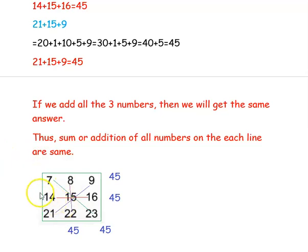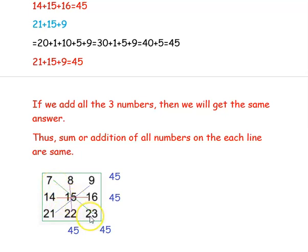The condition is: choose any square of three-by-three numbers, draw a line connecting three numbers, and that line should pass through the center number. Hope you have understood how to find the calendar magic. Thank you for watching the video.